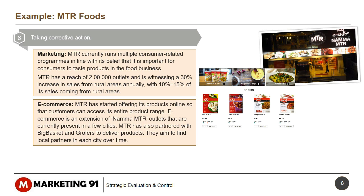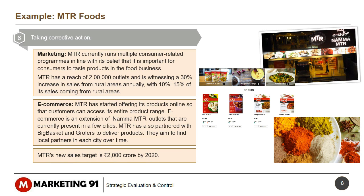On e-commerce, MTR has started offering its products online so that customers can access its entire product range. E-commerce is an extension of Namma MTR outlets, currently present in a few cities. MTR has also partnered with BigBasket and GrowFirst to deliver products, and aims to find local partners in each city over time. MTR's new sales target is Rs. 2,000 crore by 2020.